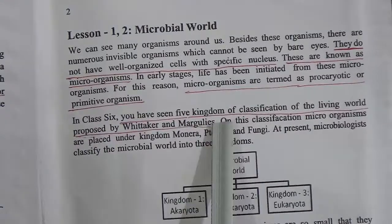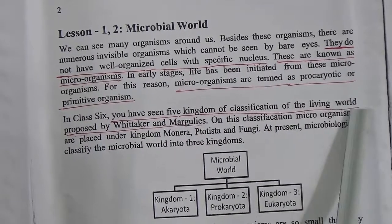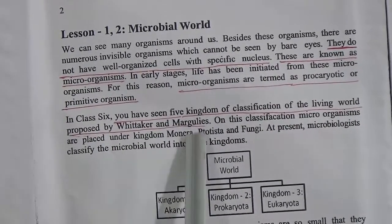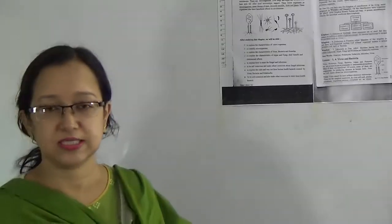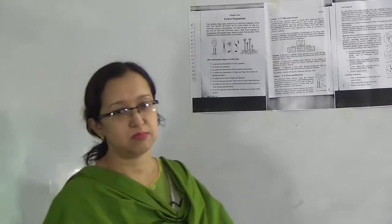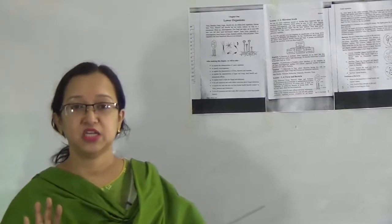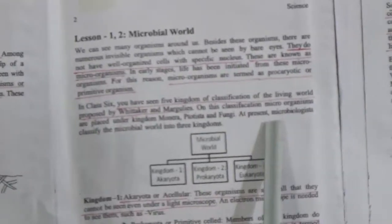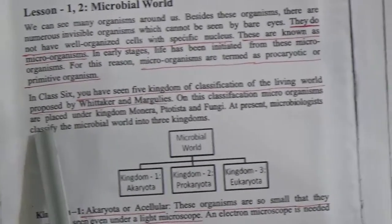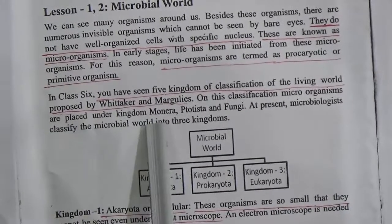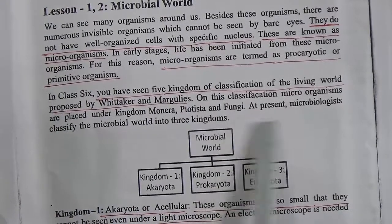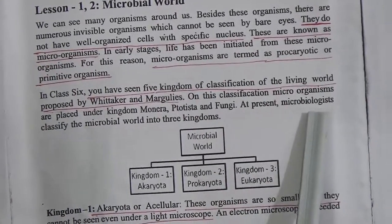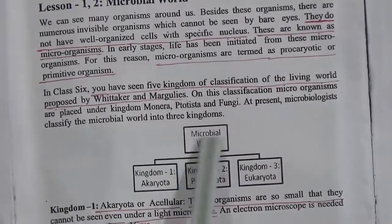In class, you have seen five kingdoms of classification of the living world proposed by Whittaker and Margulis. On this classification, microorganisms are placed under kingdom Monera, Protista, and Fungi.